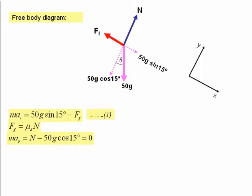In the y direction we have the resultant force is equal to N minus 50g cos 15 degrees. Now there is no acceleration in the y direction so that becomes equal to zero. And therefore, we have an expression for N as 50g cos 15.